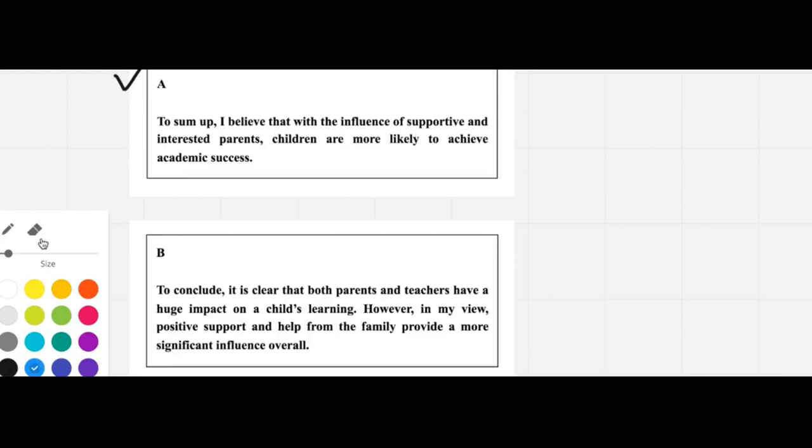Let's go for the first. We say here, 'To sum up, I believe that the influence of supportive and interested parents—children are more likely to achieve academic success.' Well, that's true, but it's not a good conclusion because it only focuses on one part.